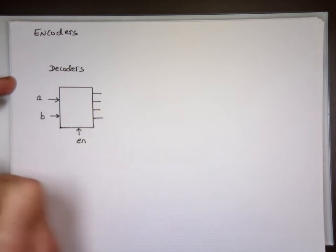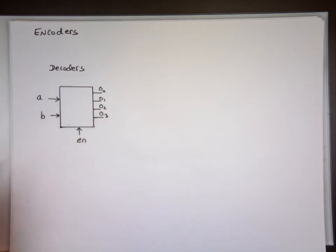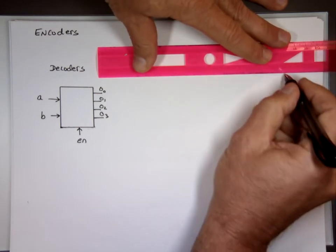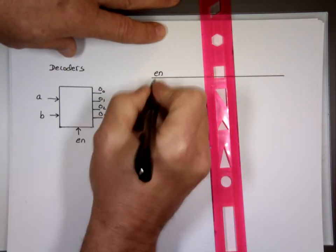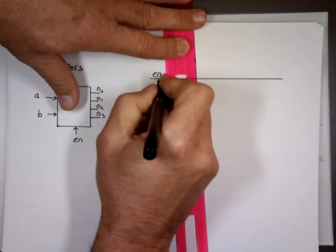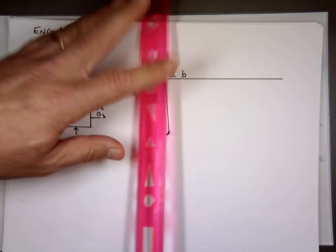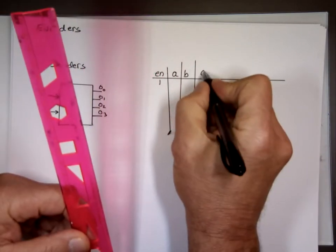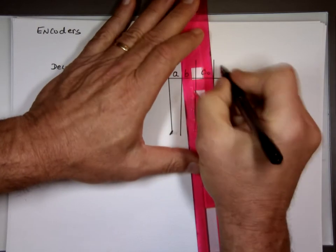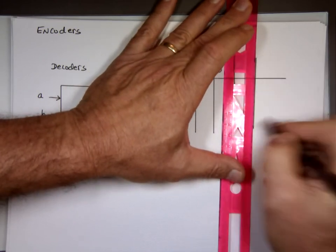You have A and B for input, and you have output 0, output 1, output 2, and output 3. If you remember the truth table for this, it looks like this. If the enable is on — in this picture I need a 1 to be on — then that chip is active, which means I can use it. And it depends on the value of A and B, which will decide what outputs 0 through 3 should look like.